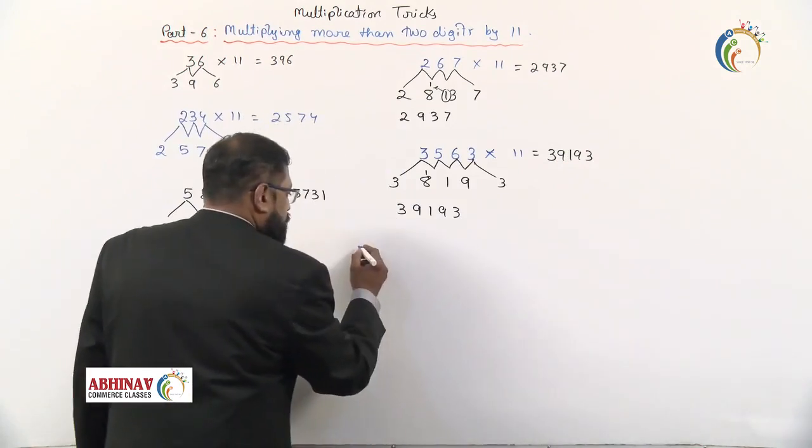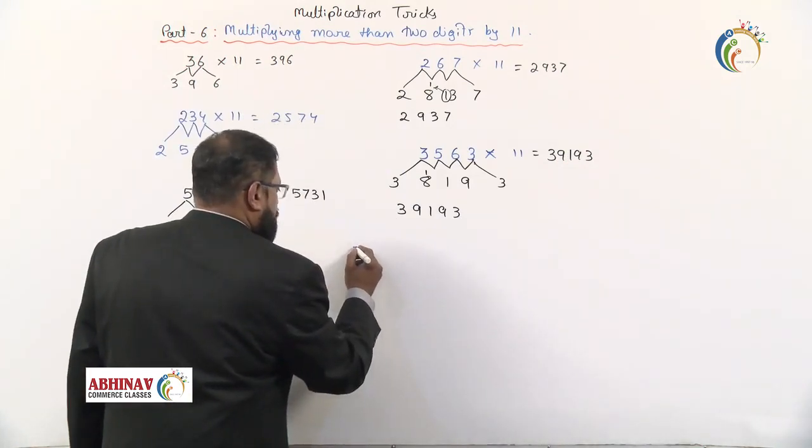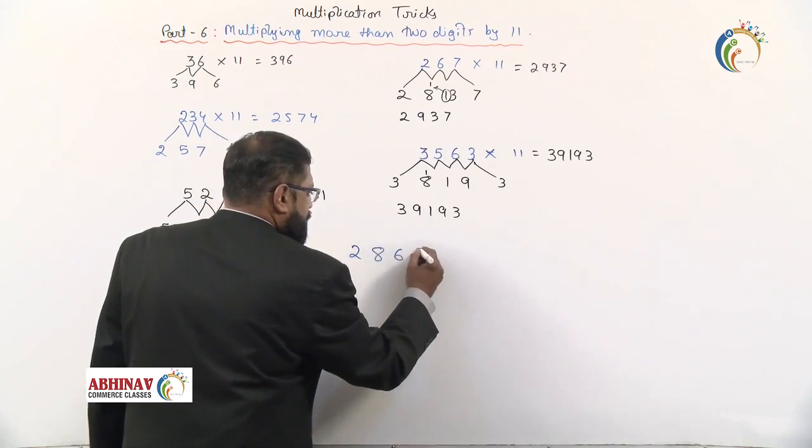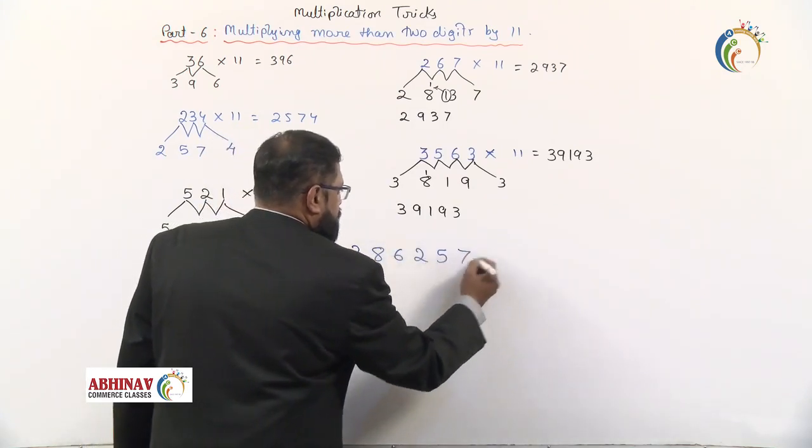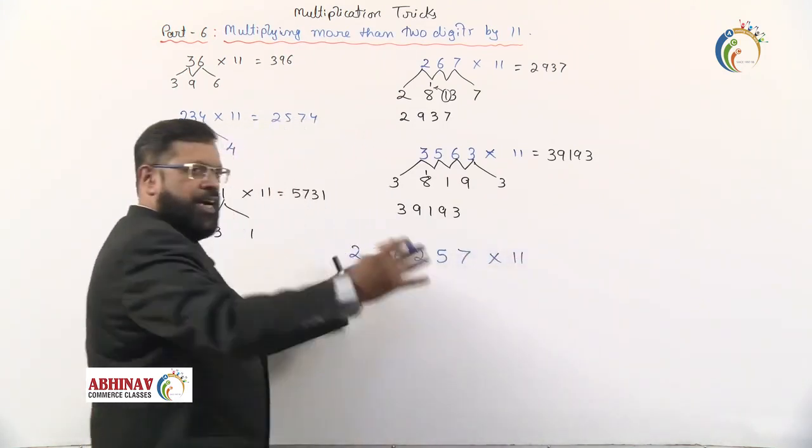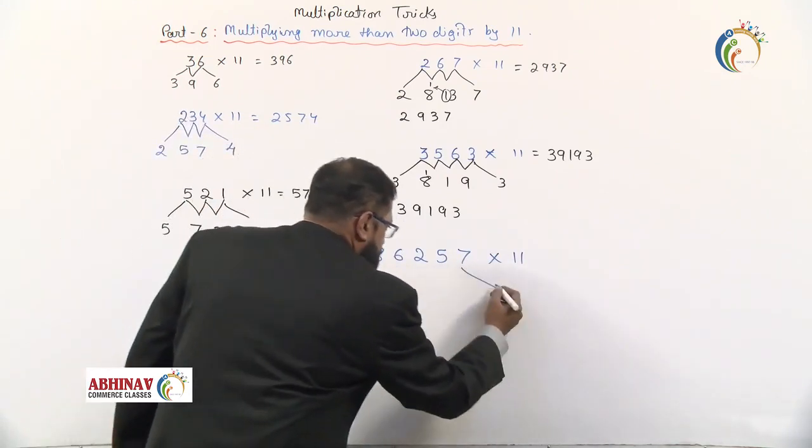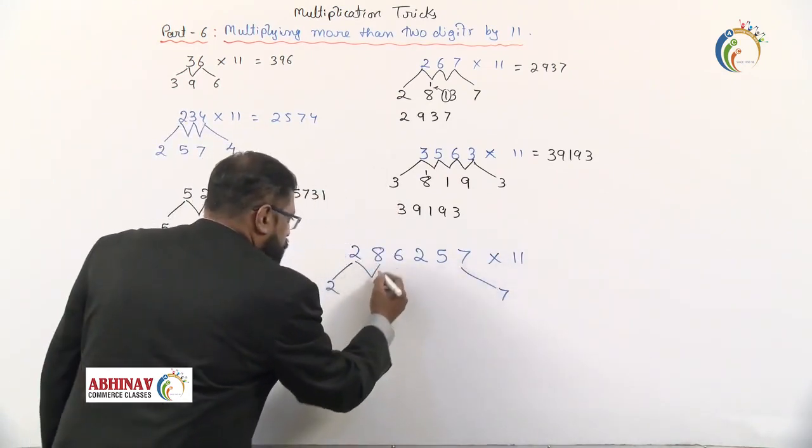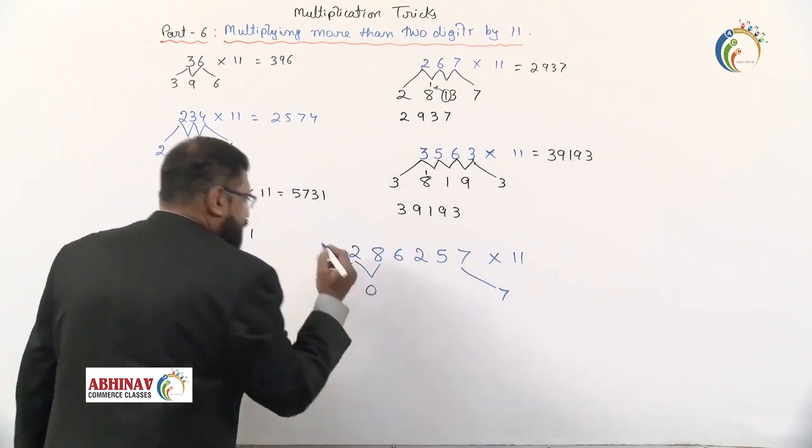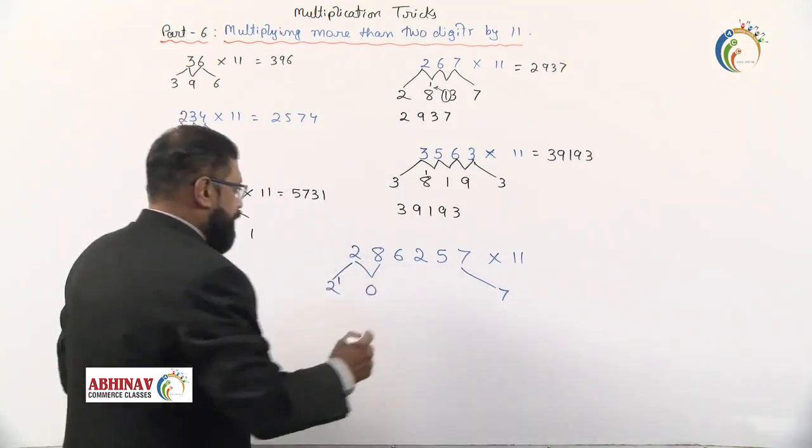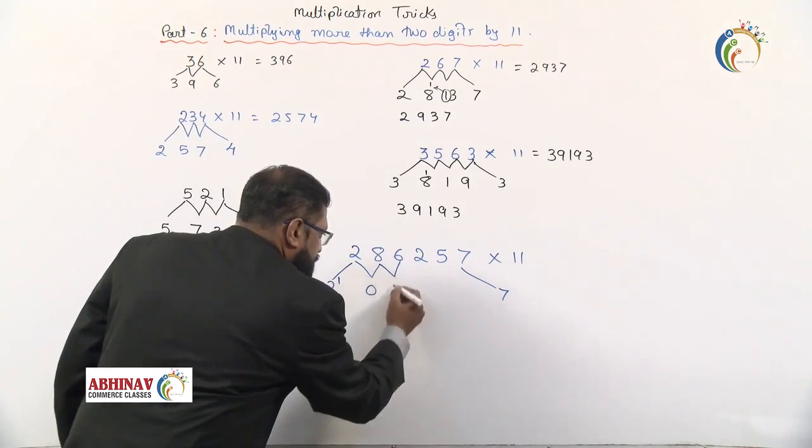Let that be any number like 286257 multiplied by 11, a bigger number. First digit 2, last digit 7. 2 plus 8 is 10; carry forward 1, we'll add it separately. 8 plus 6 is 14, write 4 here, carry forward 1.